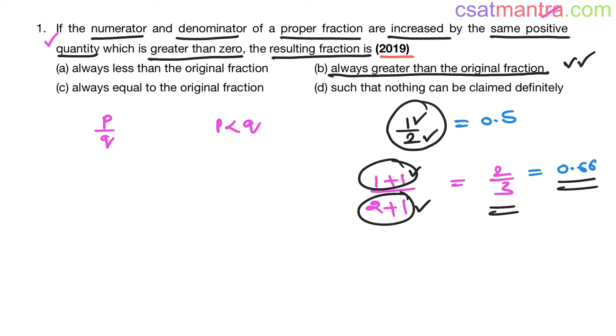Now, you take one more proper fraction, say 3 by 4, its value is 0.75. Now, I am adding 2 in numerator and 2 in denominator. This is 5 by 6. Since 5 is not divisible by 6, I am taking decimal 50. 6 eights are 48, 2 is left, 20. 6 threes are 18, again 2 is left, 20. 6 threes are 18. So, it will be 0.833 like this. Now, see, the resulting fraction is greater than the original fraction.